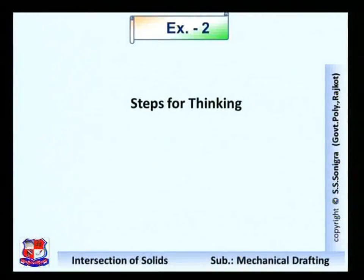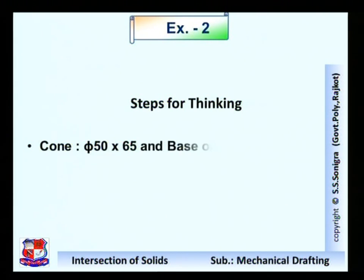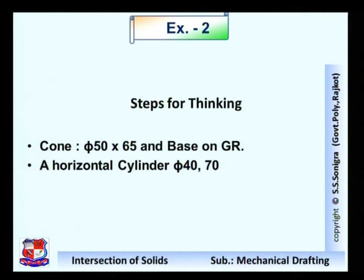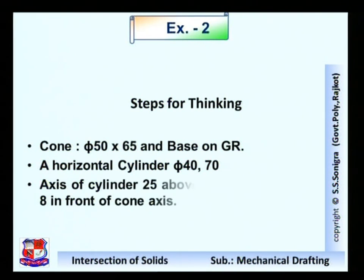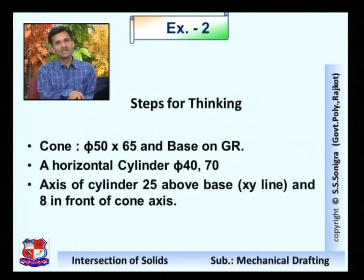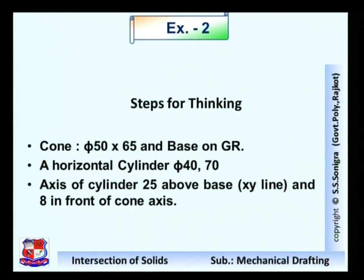Now thinking - steps for thinking. Think about the solution of this problem. First, the cone is given: diameter 50 mm, height 65 mm, base is on the ground. So we can draw its top view and front view. The horizontal cylinder is given: diameter 40 mm, length 70 mm. The axis of the cylinder is 25 mm above the base, that is, above the XY line. So we have to draw the cylinder circle above XY line at a distance of 25 mm and 8 mm in front of the cone axis.